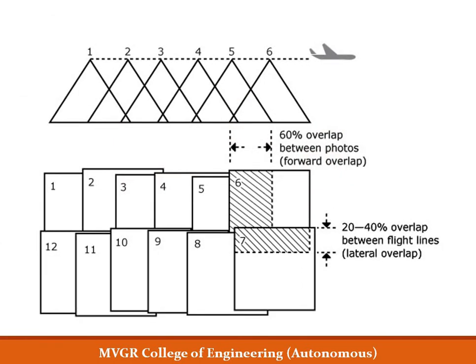Looking at this diagram carefully, it defines the different types of overlaps and how a flight plan works. The flight line is planned, and at each exposure point a snapshot of the area is taken. At exposure 1, a photograph covers a certain area; then exposure 2, exposure 3, and so on. In the same flight line we have, say, 6 photographs labeled 1 through 6.